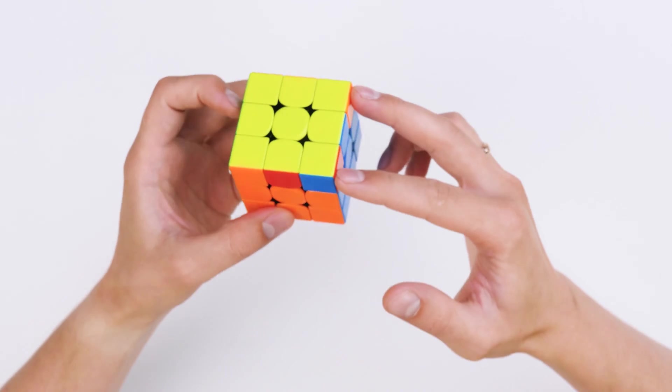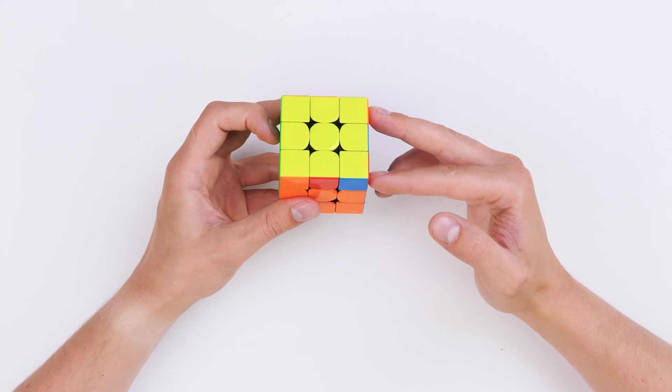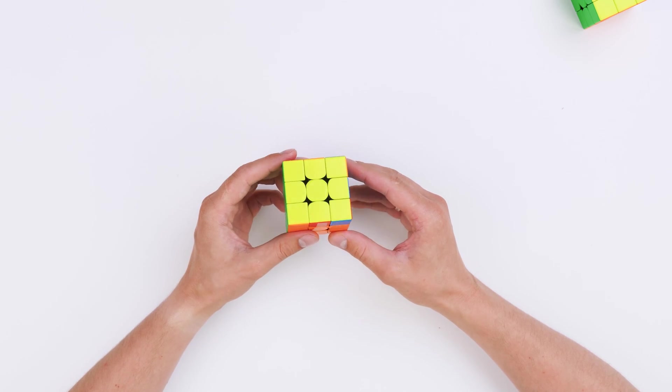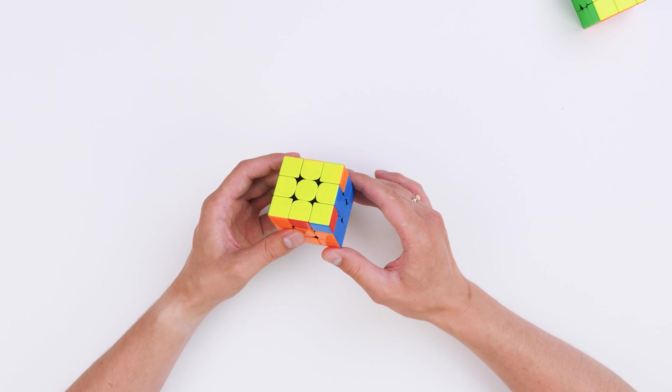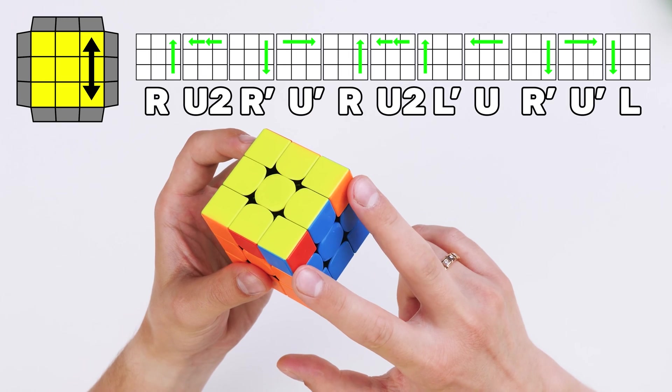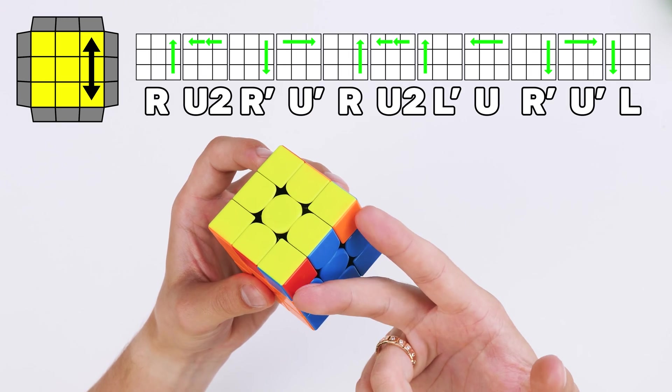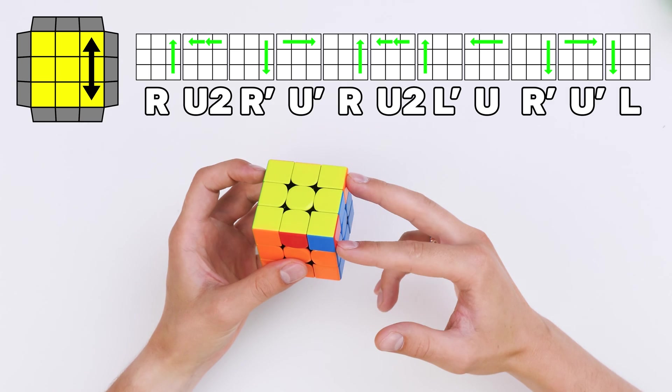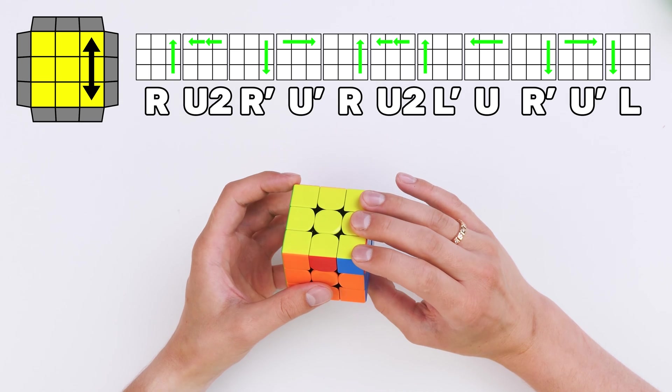For this we use the following algorithm, which is called J-permutation. I assure you, it's not as complicated as its name. Okay, let's give it a try. So, take a cube in your hands and let's try to swap these corners. I have these two corners, and you have these two same corners on your cube. To do this, repeat after me.